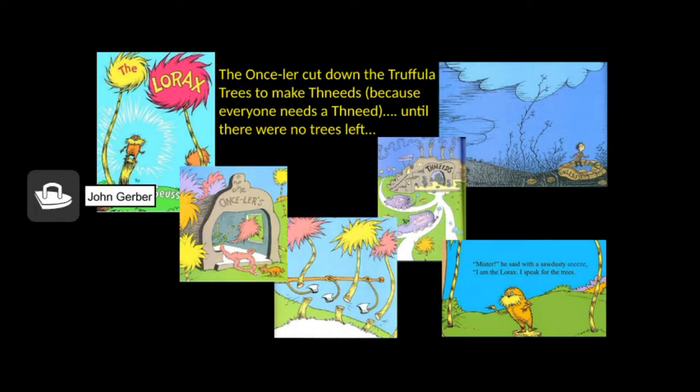Ever since we were kids, we knew this. We knew that the Onceler cut down the truffala tree because everybody needs its thneeds. And they cut the trees down, they cut the trees down until no more trees were left. And we do this over and over and over again.